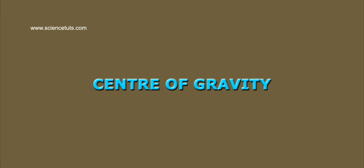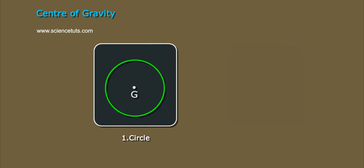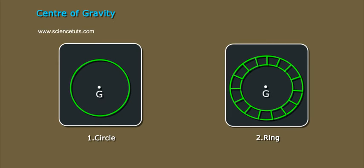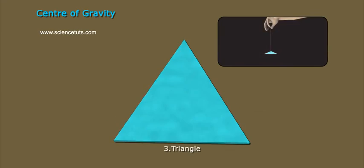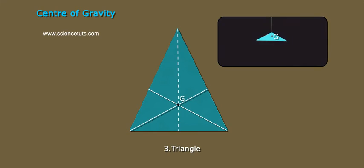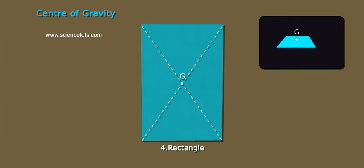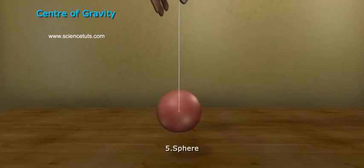Center of Gravity. 1. Circle: the center of the circle. 2. Ring: its center. 3. Triangle: centroid. 4. Rectangle: intersection of its diagonals.